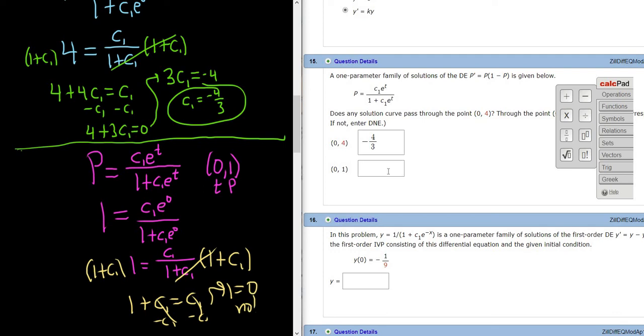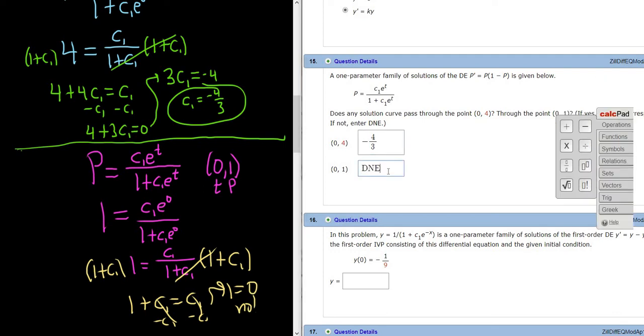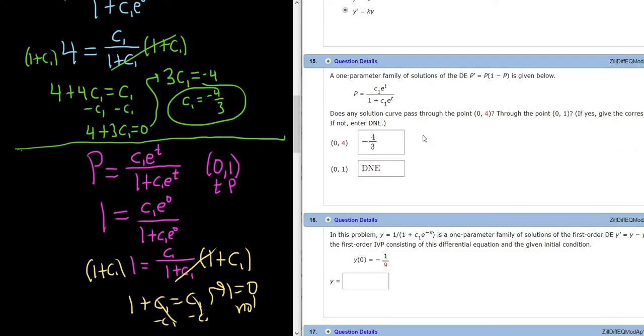So the answer here is D and E. It does not pass through the point (0,1). Kind of a nice problem. I hope this video has been helpful.